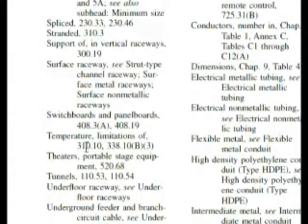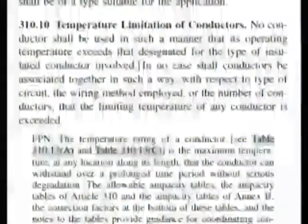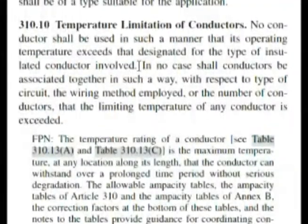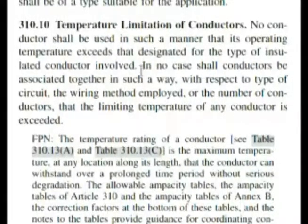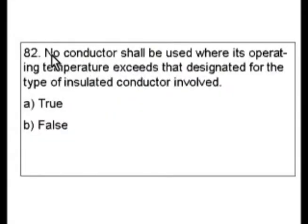Let's go to 310.10 — and if we have to, we'll go to the other one. Here we are at 310.10, temperature limitation of conductors. This first sentence is just about word for word of our question, so that would make it true. You even get more emphasis reading the next sentence, and the fine print note doesn't change anything we've read. We found it in the code almost word for word right here. So A is true — that is the answer to question 82.